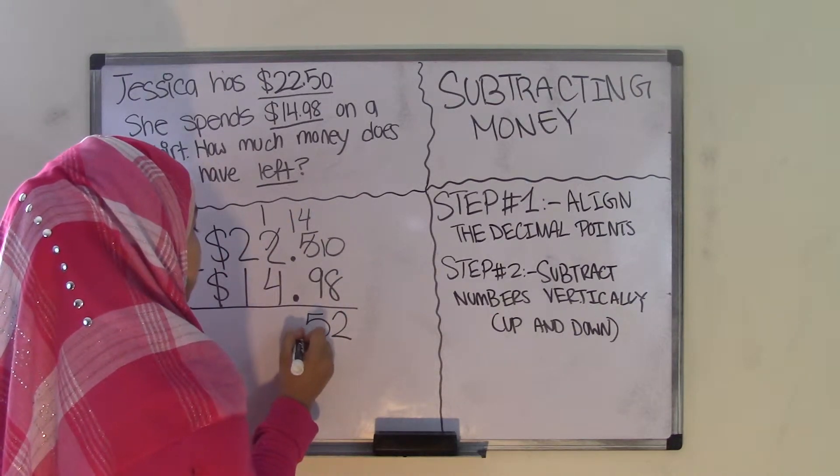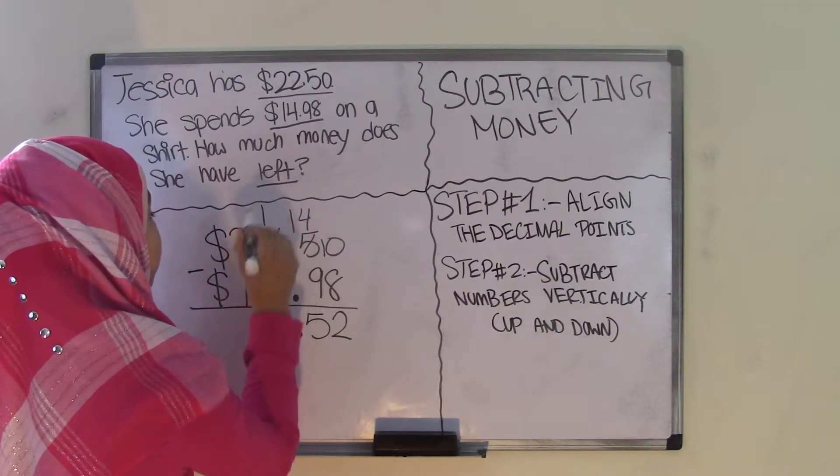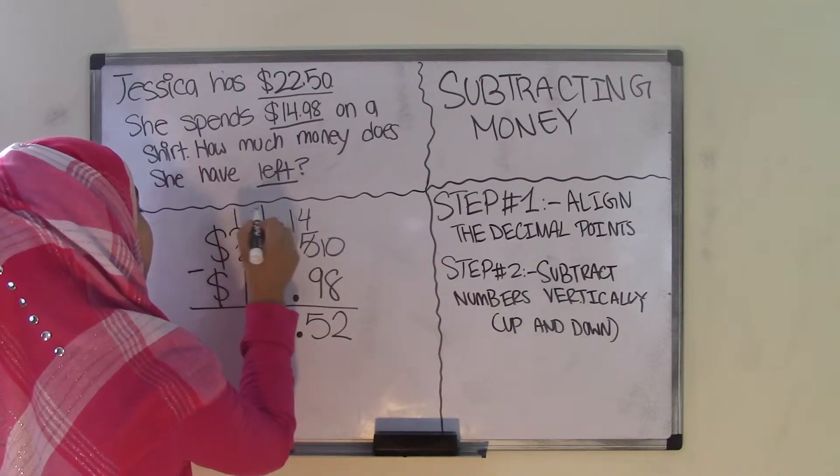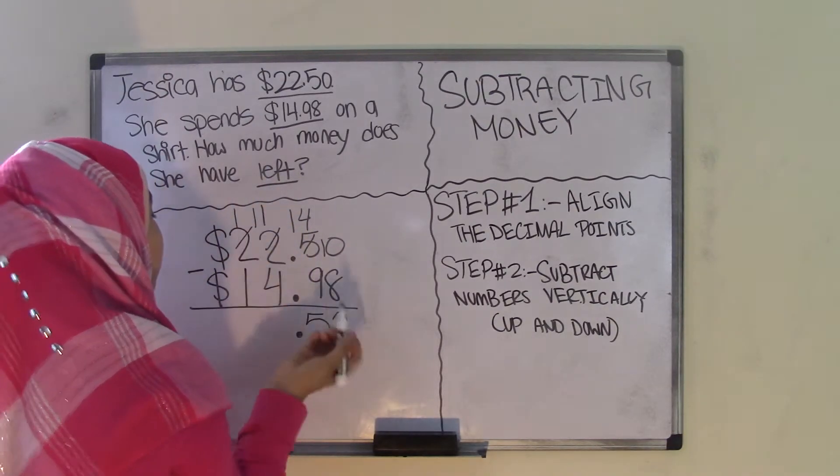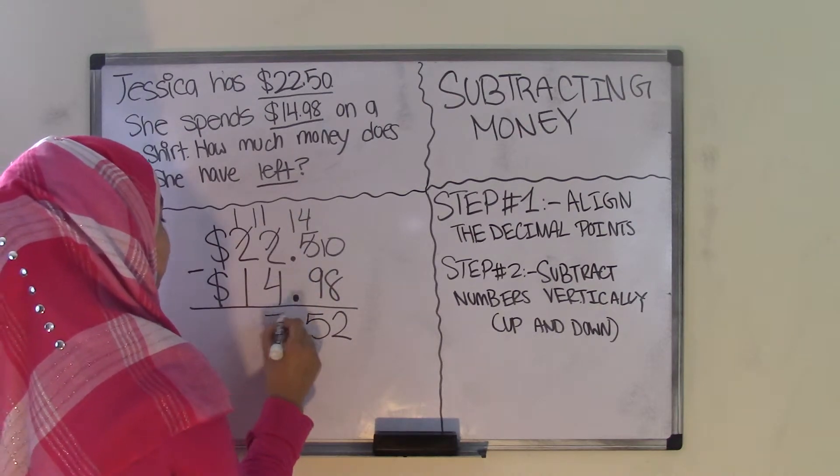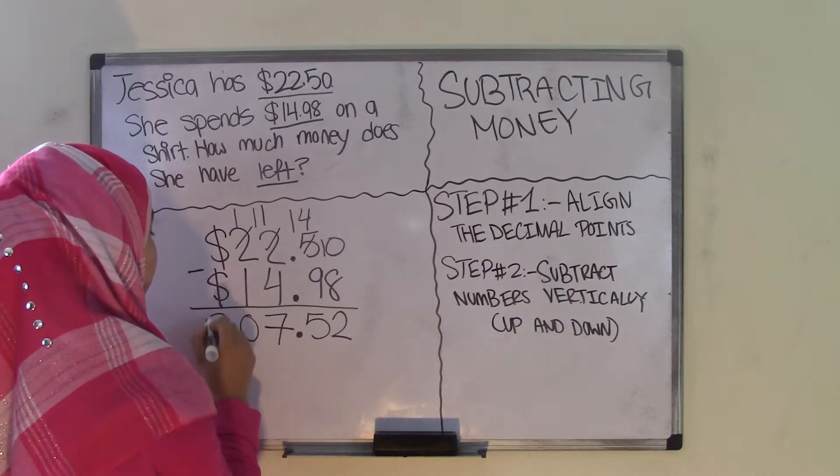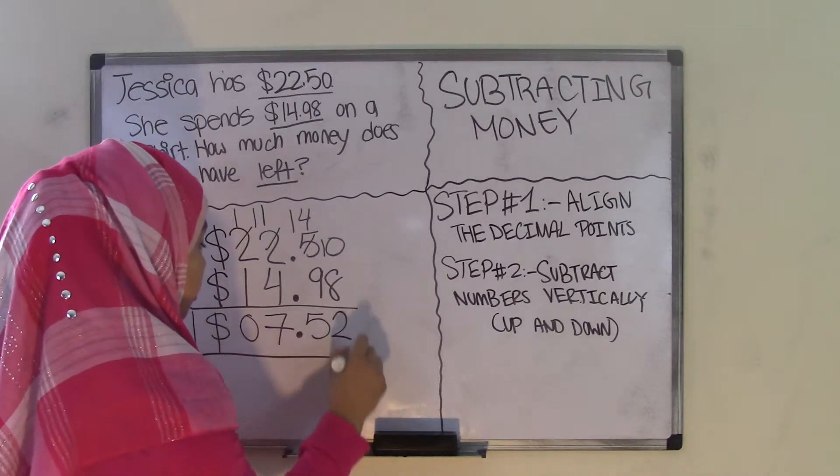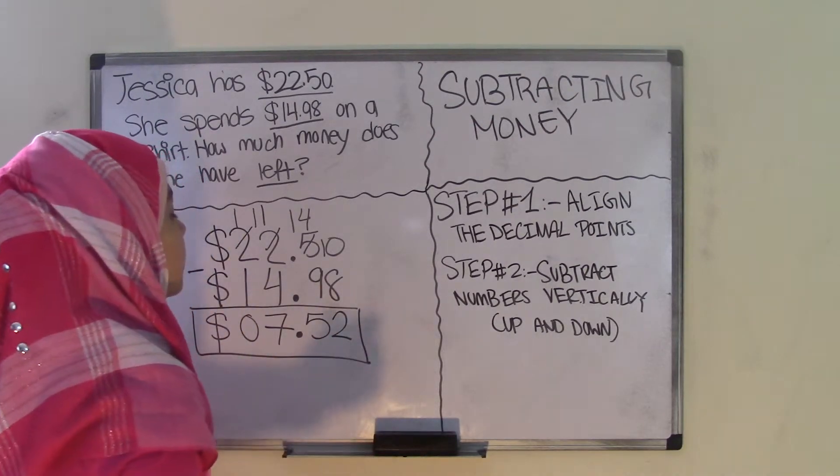Bring down the decimal point just as it is. Now we can't subtract 4 from 1, so we're going to have to borrow 1 from the 2 to make that the 2 a 1 and the 1 an 11. So 11 minus 4 is 7, and 1 minus 1 is 0, and bring down the dollar sign. And you get your difference of $7.52.